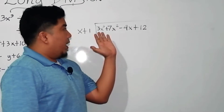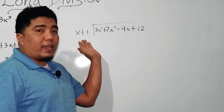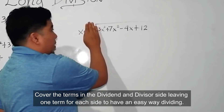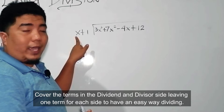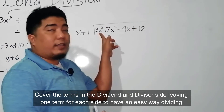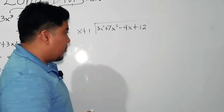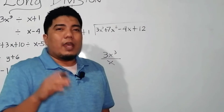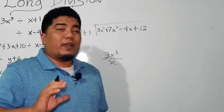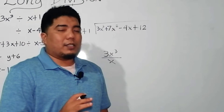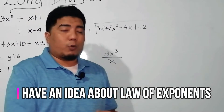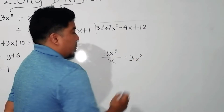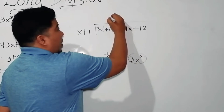Now, what is the next step? Since this is already arranged and the divisor is here, the next thing you do is cover the second term of your divisor, leaving you x, and cover the remaining terms, leaving 3x cubed. This is very crucial because that will be the first part of your quotient. So we have 3x cubed divided by x. In long division, you must know how to divide monomials using the law of exponents. 3x cubed divided by x gives 3x squared, which will be placed in the quotient.